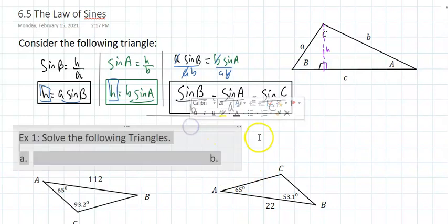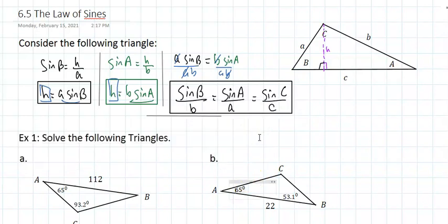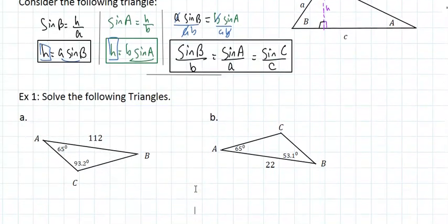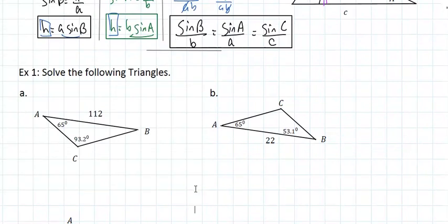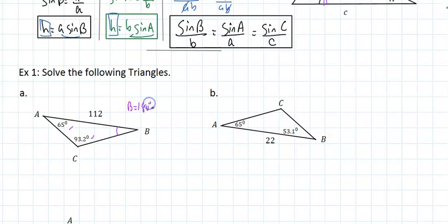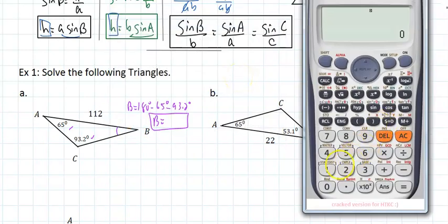We're going to start with our first examples — solve the triangles, find everything that's missing. The book insists on the law of sines. I can figure out the missing angle because the sum of the three angles of any triangle is 180 degrees. So beta is 180 minus 65 degrees minus 93.2 degrees.